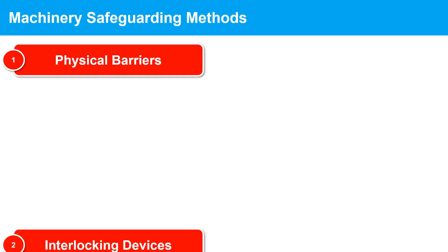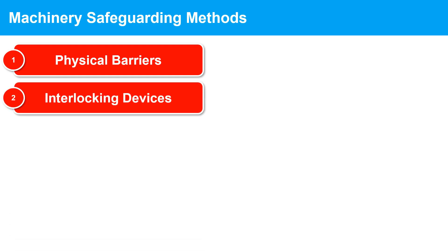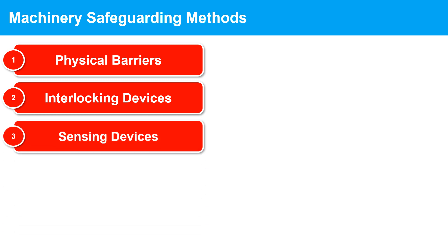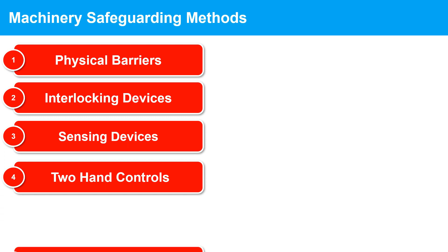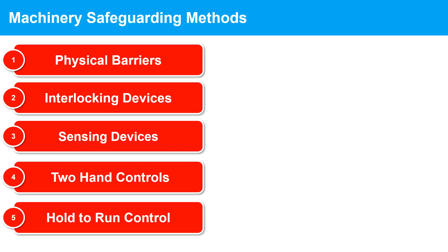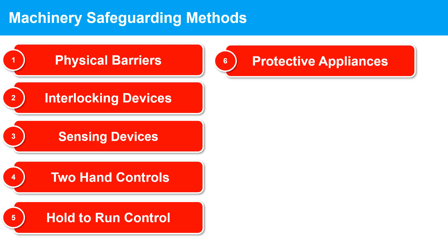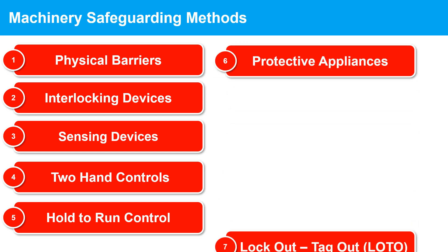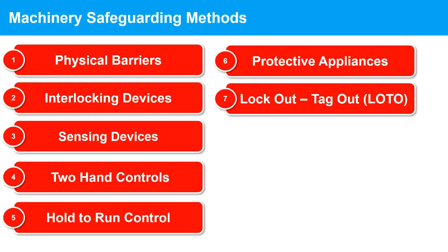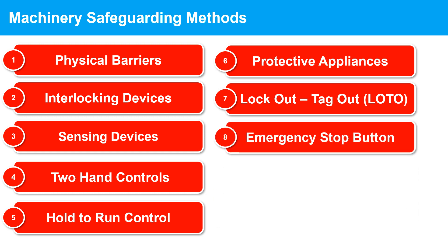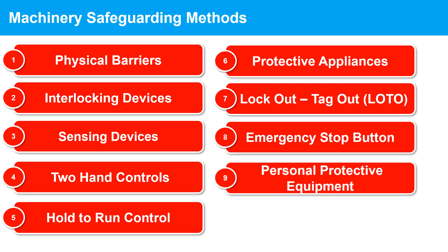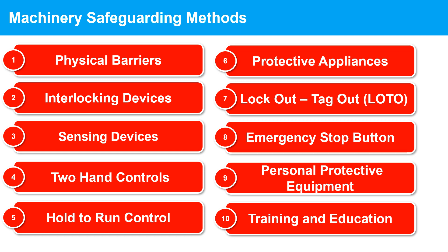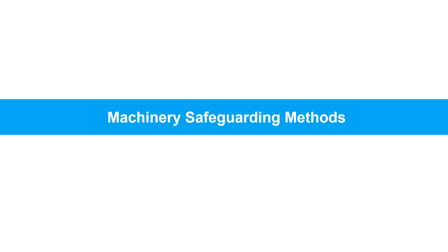1. Physical barriers. 2. Interlocking devices. 3. Sensitive protective equipment devices. 4. Two-hand controls. 5. Hold-to-run control. 6. Protective appliances. 7. Lockout/tag-out (LOTO). 8. Emergency stop button. 9. Personal protective equipment (PPE). 10. Training and education. Let us understand the various machinery safeguarding methods in detail.